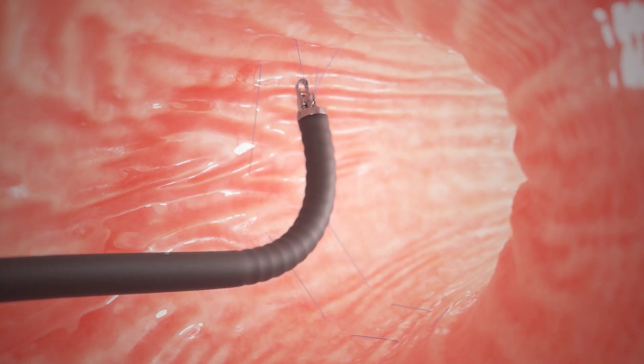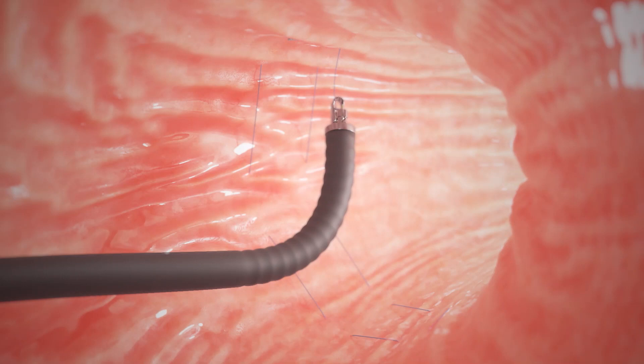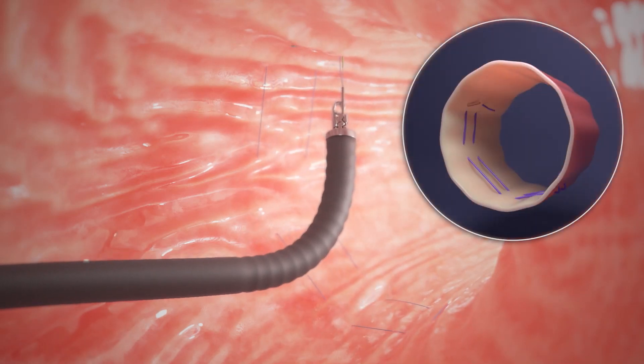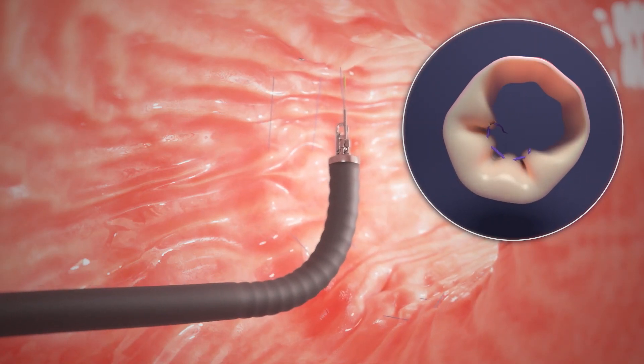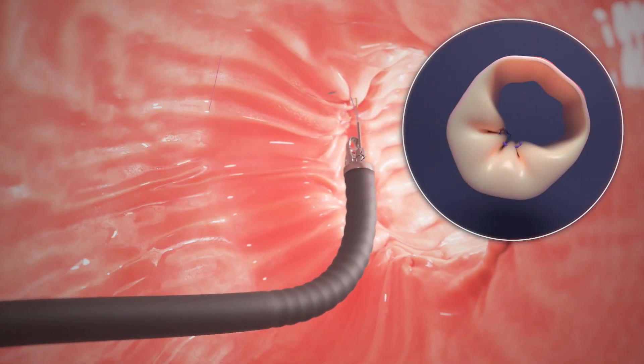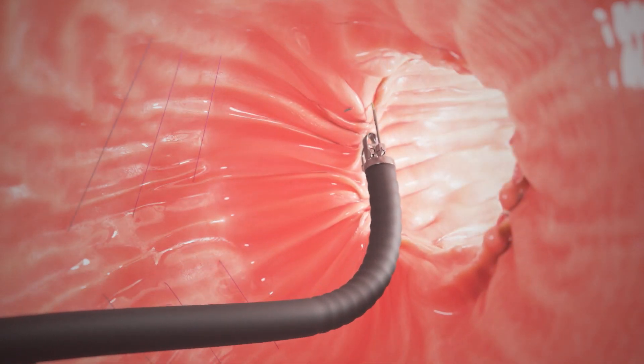As each U is completed, the suture is tightened down to reduce the volume of the stomach. The doctor continues to sew along the large curve of the stomach until six to eight sutures are completed.